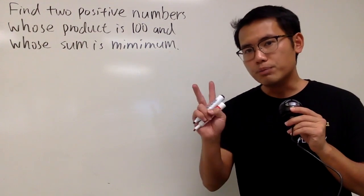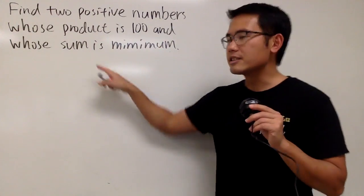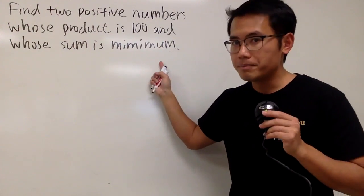Okay, for this question, we're going to find two positive numbers so that their product is 100, but their sum is going to be the minimum. So here we go.